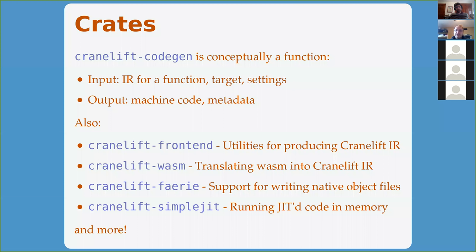The central crate is the CraneLift code gen crate. At its core, it's conceptually a function in the mathematical sense. The input is IR — intermediate representation for a function — plus a target description (basically a machine like x86), calibration settings, and optimization level. The output is machine code, which is just an array of bytes that your CPU can execute, plus metadata describing which instructions are expected to trap, which reference symbolic addresses needing relocation, and debug info.